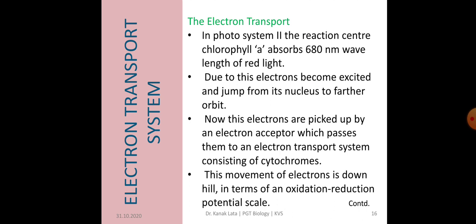In photosystem 2, the reaction center chlorophyll A absorbs 680 nanometer wavelength of red light. This causes electrons to become excited and jump into an orbit away from the atomic nucleus. These electrons are further picked up by an electron acceptor.